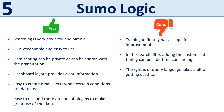Pros of Sumo Logic include very powerful and nimble search, a simple and easy-to-use UI, the ability to share data privately or organization-wide allowing developers to create and share searches, a dashboard layout that provides clear information, easy email alert creation when conditions are detected, lots of plugins to make great use of data, and excellent AWS support. Cons include training that needs improvement, adding customized timing in search filters that can be time-consuming, and a syntax or query language that takes some getting used to.